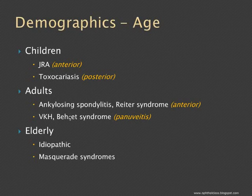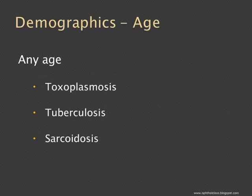Which age group corresponds to which uveitis? In children, juvenile rheumatoid arthritis-driven uveitis can be seen in children as young as 4 to 5 years. Toxocariasis is a posterior uveitis seen in children. In adults, the spondyloarthropathy HLA-B27 negative group is very commonly seen in young adult males, and among panuveitis, VKH and Behcet's disease are commonly seen in adults. When an older person presents with uveitis for the first time, it could be idiopathic, but it is more important to rule out masquerade syndrome — particularly neoplastic variety. Uveitis diseases that can present in any age group include toxoplasmosis, tuberculosis, and sarcoidosis.